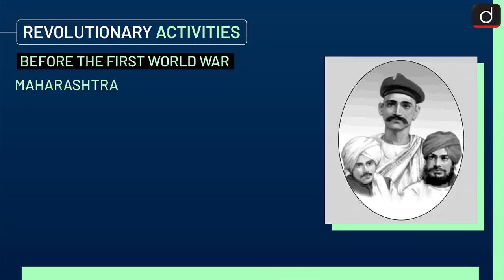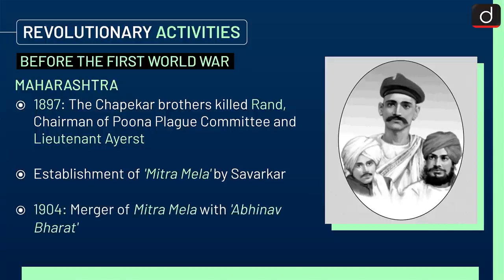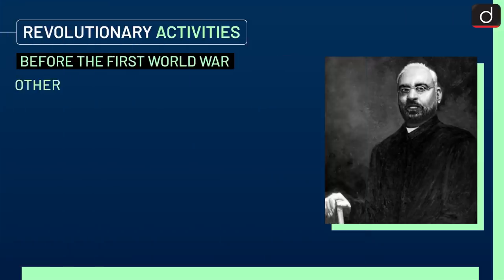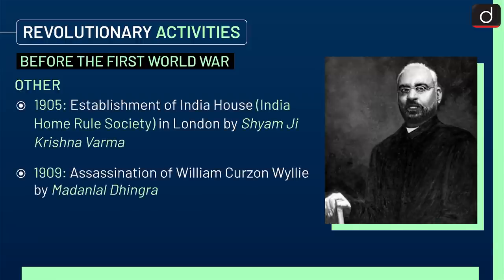Activities in Maharashtra: In 1897, the Chapekar Brothers killed Rand, Chairman of the Pune Plague Committee, and Lieutenant Ayerst. Savarkar established Mitra Mela, and in 1904, Mitra Mela merged with Abhinav Bharat. In 1905, Shyamji Krishnavarma established India House and the India Home Rule Society in London. In 1909, Madan Lal Dhingra assassinated William Curzon Wyllie.